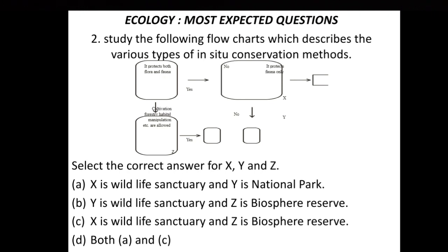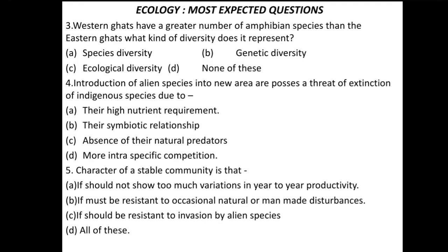If you study the flowchart properly, you are asked to identify X, Y, and Z. Four options are provided: A, B, C, D. The correct option is B — Y represents wildlife sanctuaries, where only animals are protected and cultivation, forestry, and human interference are completely allowed. Z is a biosphere reserve, which is divided into three zones where different activities are allowed. So the correct option for the second question is B.